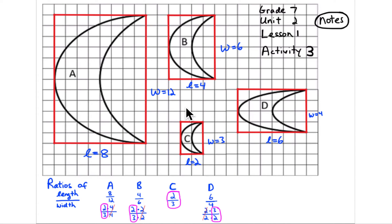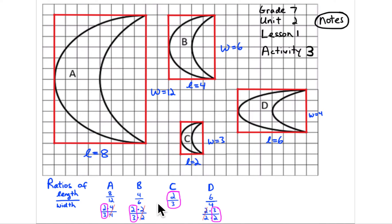For Activity 3, you have a bunch of crescent moons. Circumscribe each moon with a rectangle and look at the lengths and widths to find which moon is not like the others. Write a ratio of length to width: A is 8 to 12, B is 4 to 6, C is 2 to 3, and D is 6 to 4. Simplifying each: 8/12 = 2/3, 4/6 = 2/3, 2/3 = 2/3, but 6/4 = 3/2. So D is the one that's not like the others — you can also confirm this visually.